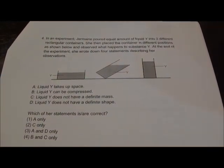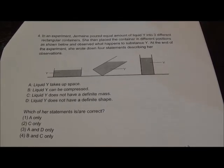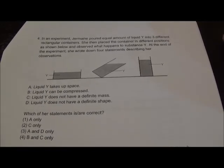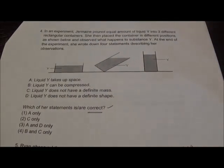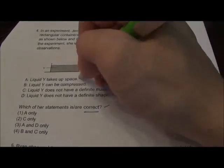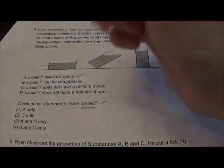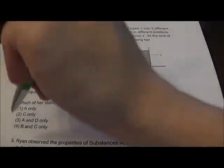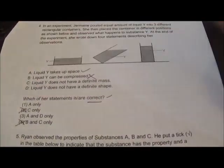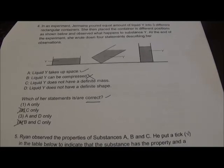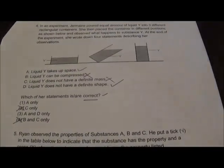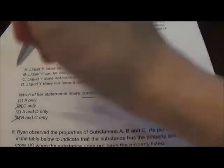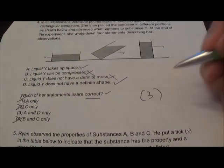Question 4: Jermaine put equal amounts of liquid Y into 3 different rectangular containers placed in different positions. Which statements are correct? They take up space — true. It cannot be compressed — cancel those with B. Those without A cancel also. It does not have a definite mass — you can't tell from that. It does not have a definite shape — definitely true, because it takes the shape of whatever container it's in. So A and D. Question 4, your answer is 3.